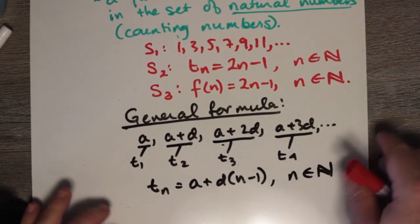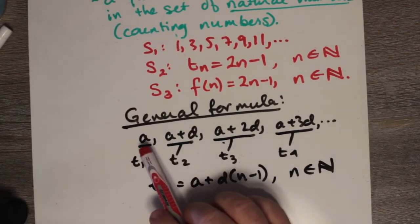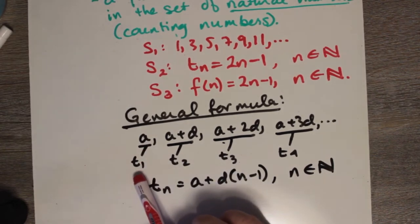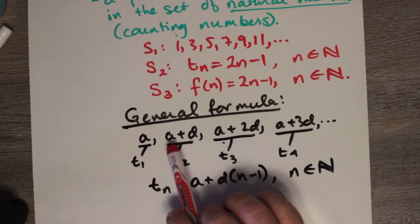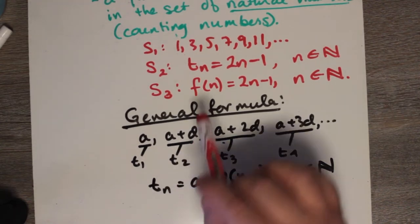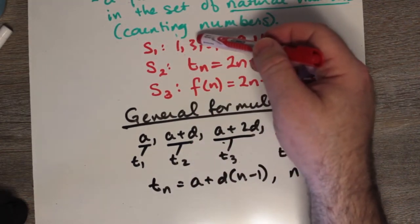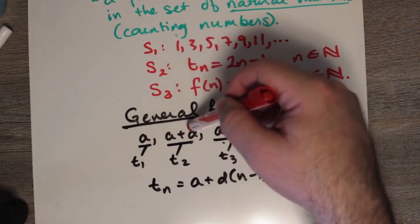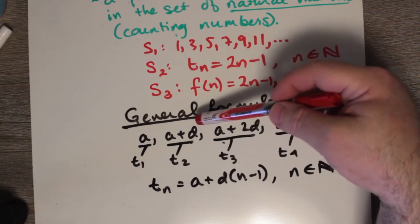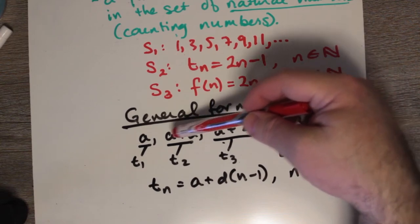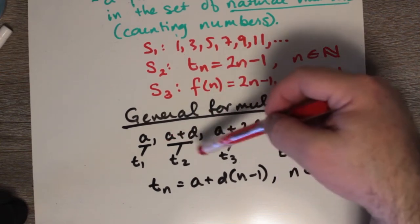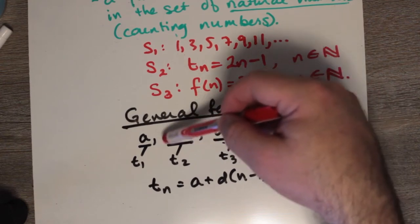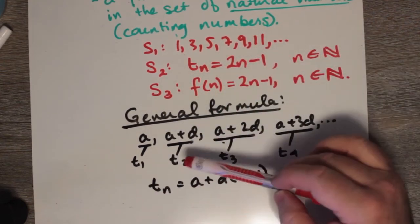To arrive at the general formula, we start off with some first term A, which we can call T1. To A, we add some common difference D. For example, to get from 1 to 3 we add 2. So D is added to A, giving us our second term T2.